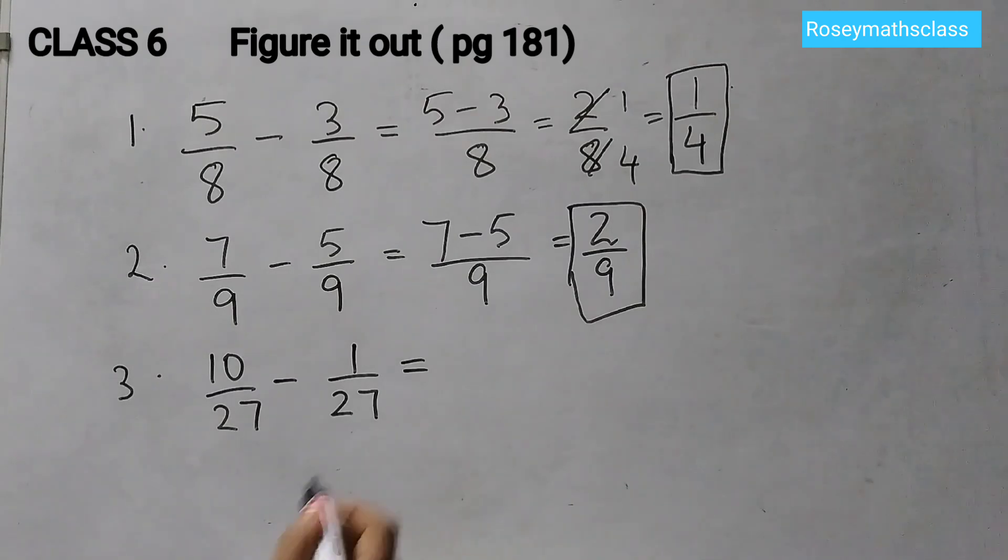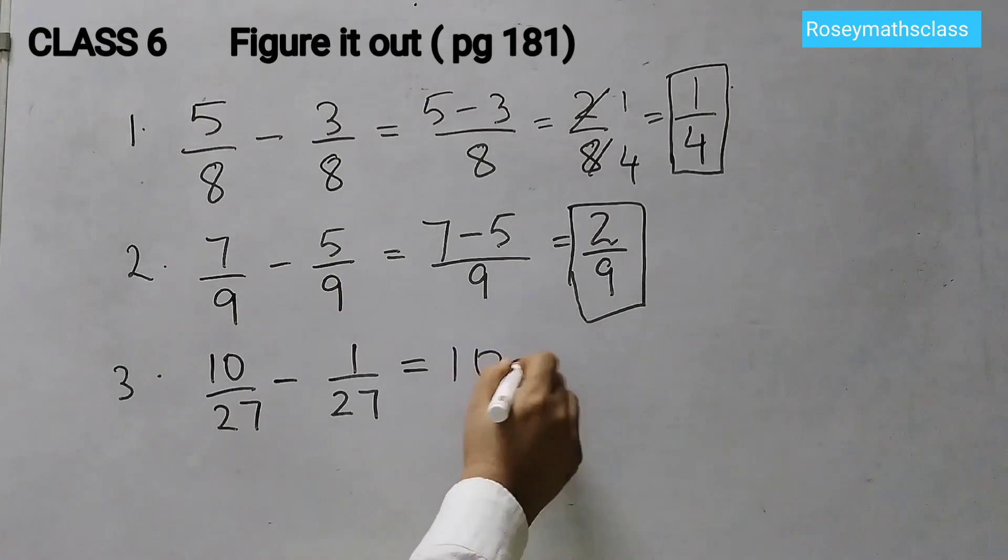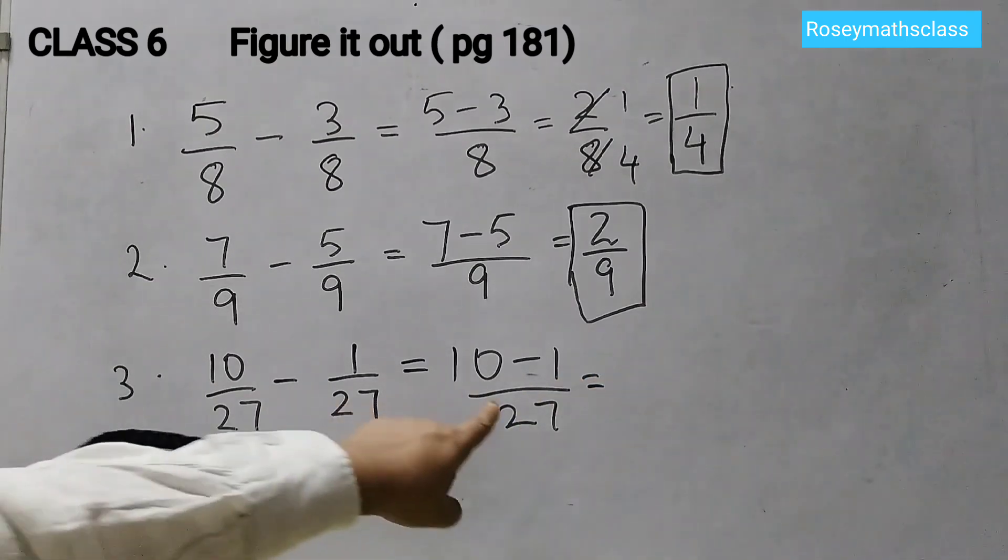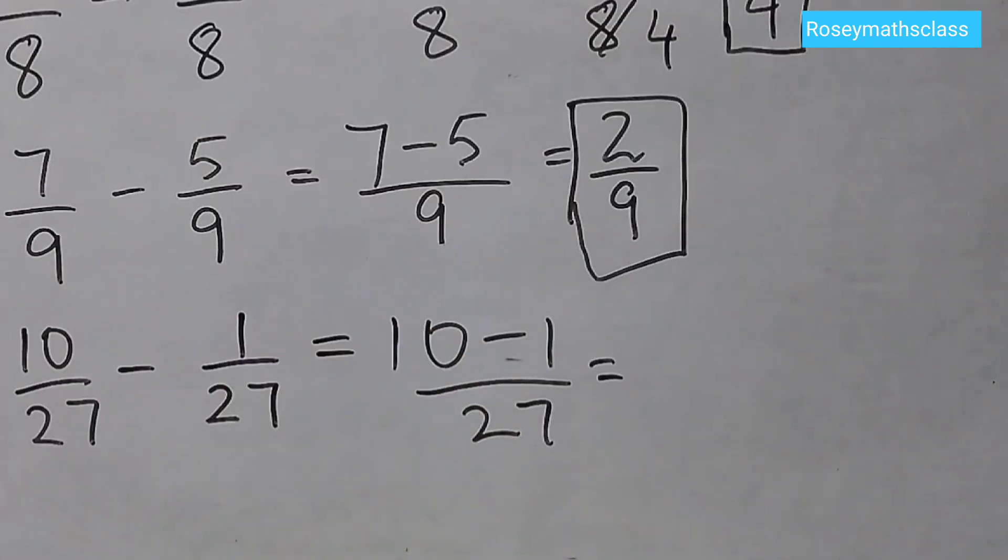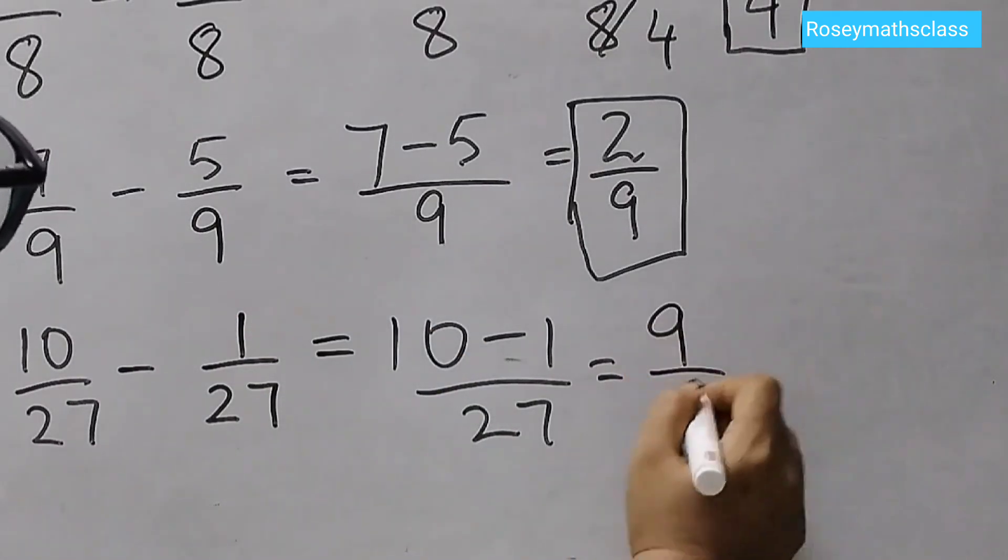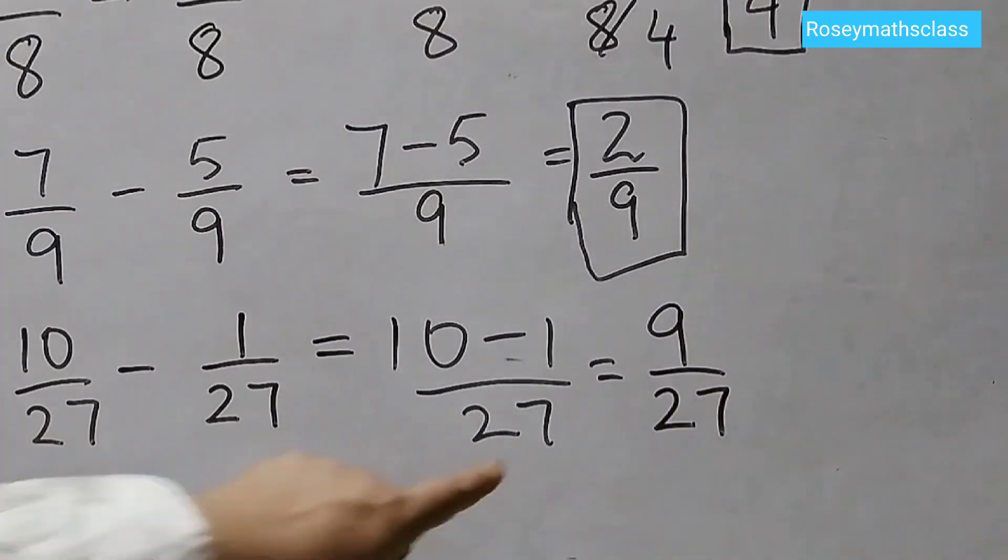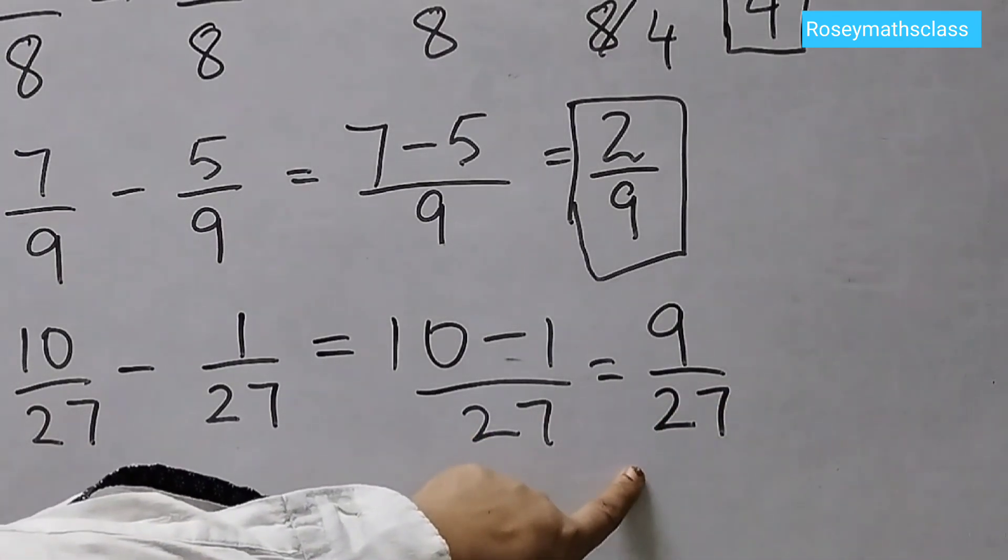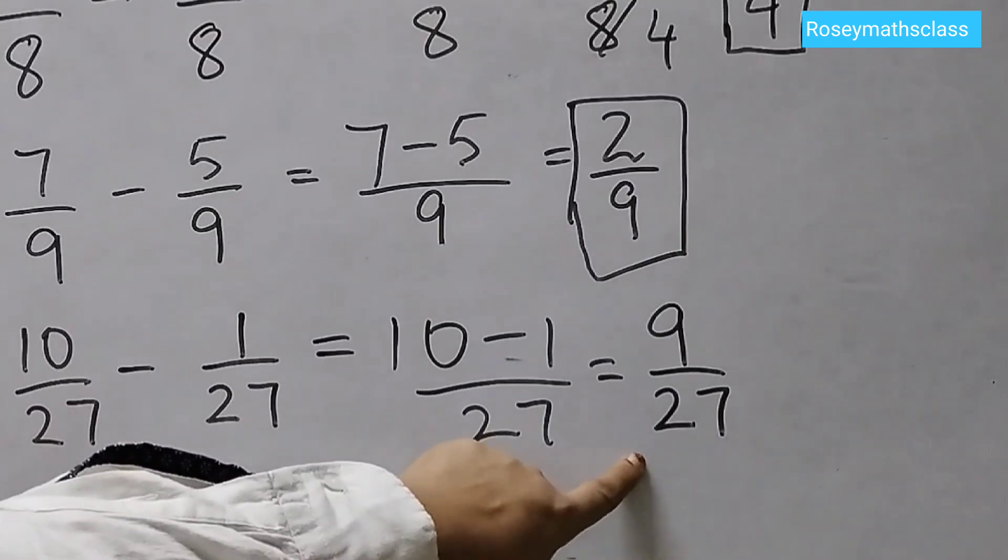And the last one is 10 by 27 minus 1 by 27. 10 minus 1 upon 27. 10 minus 1 is 9, correct. So 9 upon 27. Now don't leave the answer like this. Always you need to give the answer in lowest term. Okay, simplify it.